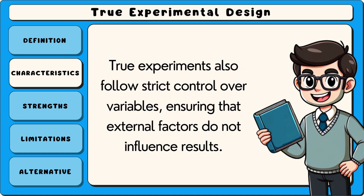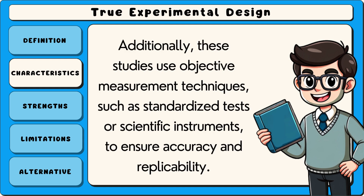True experiments also follow strict control over variables, ensuring that external factors do not influence results. Additionally, these studies use objective measurement techniques, such as standardised tests or scientific instruments, to ensure accuracy and replicability.